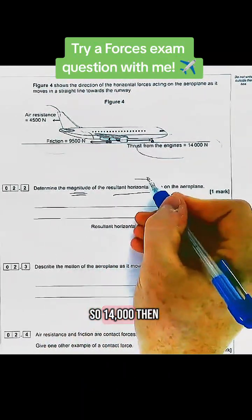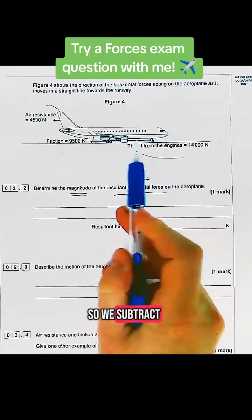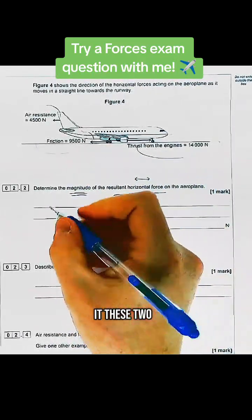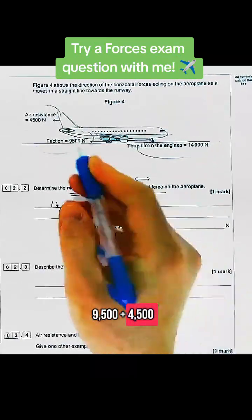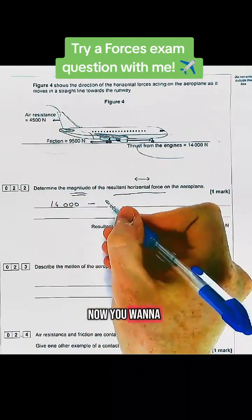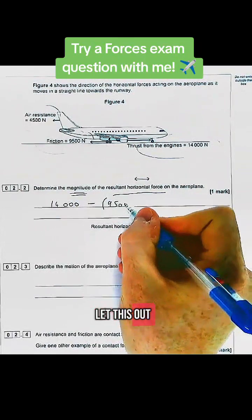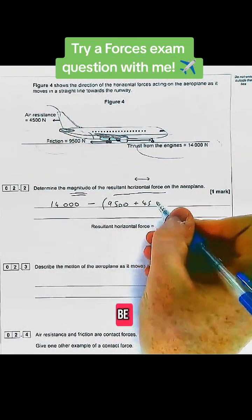14,000 in one direction. Then the other direction, so we subtract these two added together - 9,500 plus 4,500. You might need to put this into a calculator. This one should come out to zero.